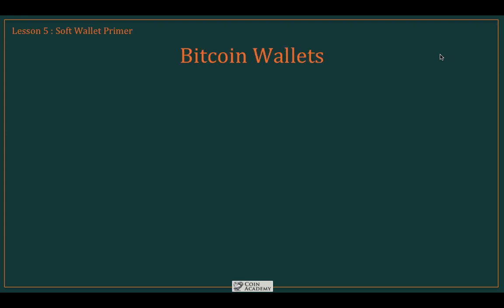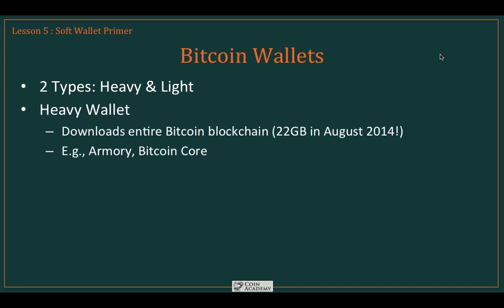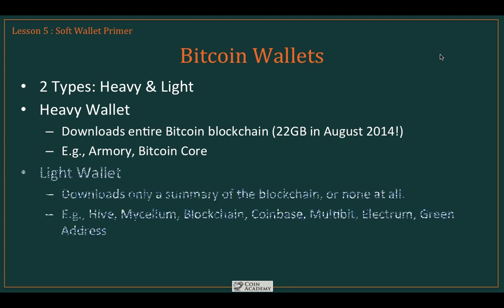Before we get started, let's cover some basic terminology. There are two types of wallets: heavy wallets and light wallets. Heavy wallets download the entire Bitcoin blockchain — examples would be Armory or Bitcoin Core. Light wallets, in contrast, download only a summary of the blockchain or none at all.